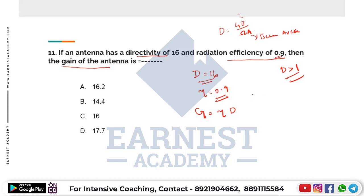The efficiency is less than 1 and the directivity is greater than 1. When we compute the gain, we multiply the efficiency by the directivity value. Therefore, the gain is always less than the directivity.